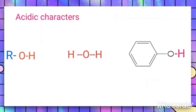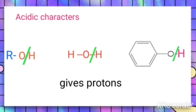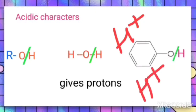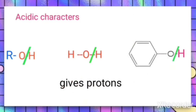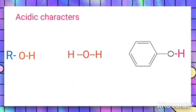Let us compare the acidic character of alcohol, water, and phenol. In all these cases there is a cleavage of the O-H bond, giving rise to H+ ions, so all of them can act as acids. But let us find out which one is a stronger acid, since a substance which gives H+ ions very easily is called a strong acid.